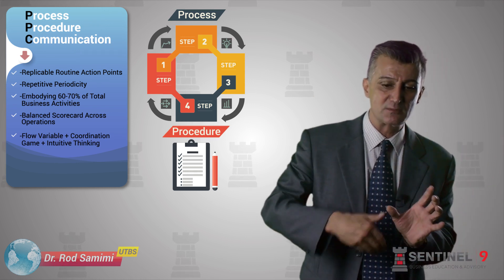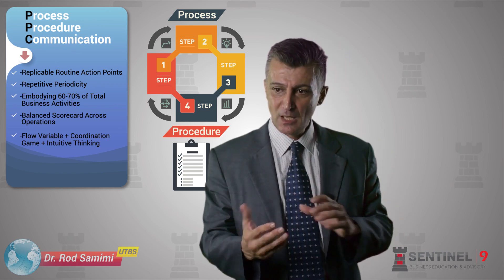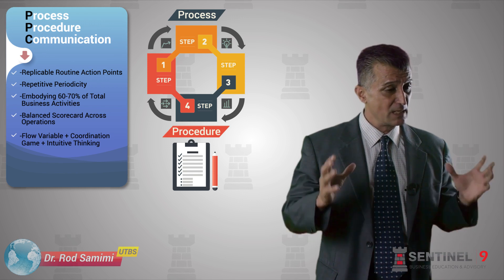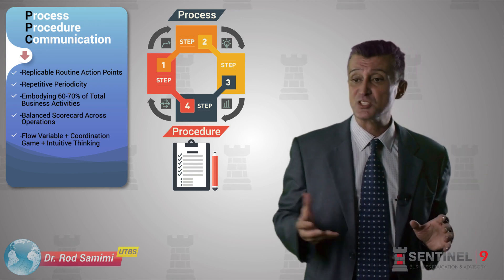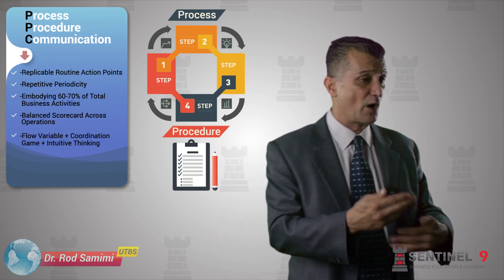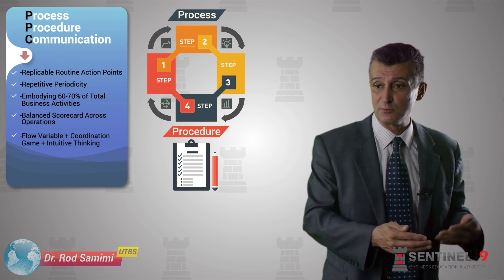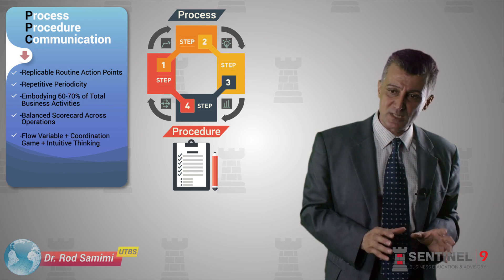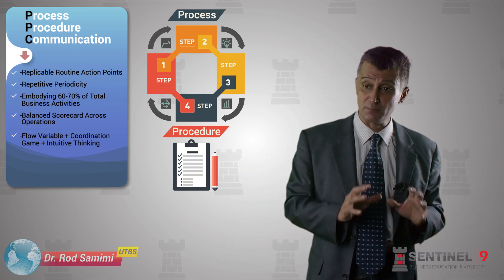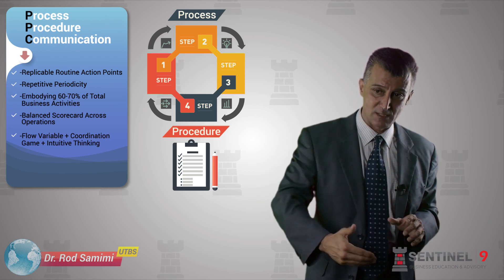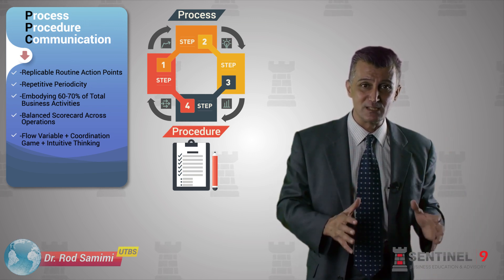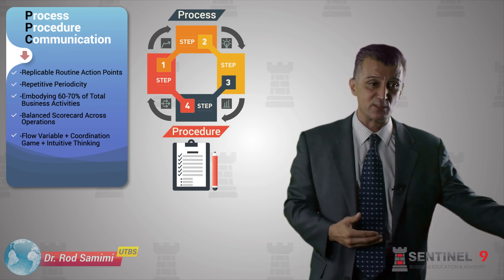So the first element of our implementation methodology is the regular things that need to be done, encapsulated in processes — what that means — procedures — how to do things — and communication interface. Within this, some processes and procedures are generic and every company needs them: a marketing process, how often to go to market, how to check sales, how often to review cash flow or profit and loss. Some are specific, peculiar to that business. Both embody the regular activities, reflecting the flow diagrams, coordination games, and intuitive thinking discussed previously.